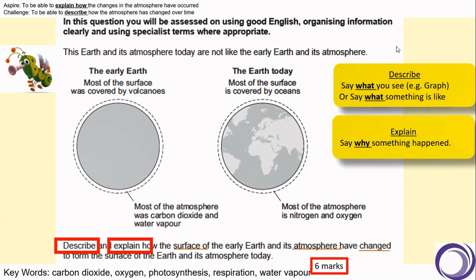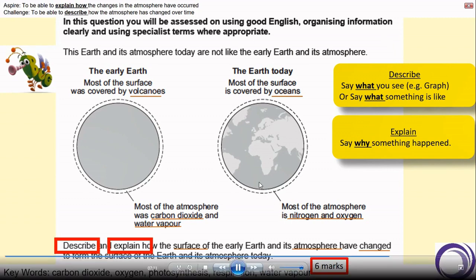So let's go to the information and see what else they've provided us with. We can see that in the surface comments they have commented on the early Earth being covered by volcanoes, and the Earth today where most of the surface is covered by oceans. In the atmosphere, they've talked about how the majority of the atmosphere was carbon dioxide and water vapour in the early Earth, and now it's nitrogen and oxygen. So when answering this question we're going to look at what has changed between those two Earths and explaining why that change has occurred. Take some time, pause the video if you need to, and have a go at answering this question.